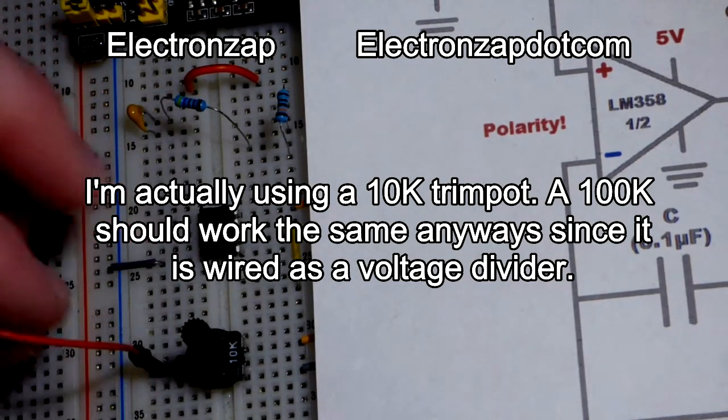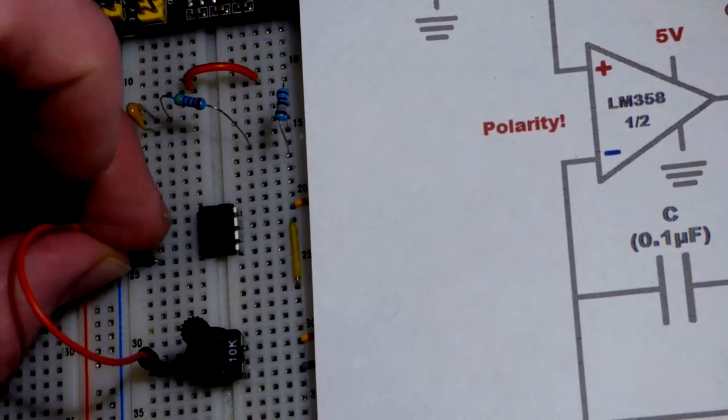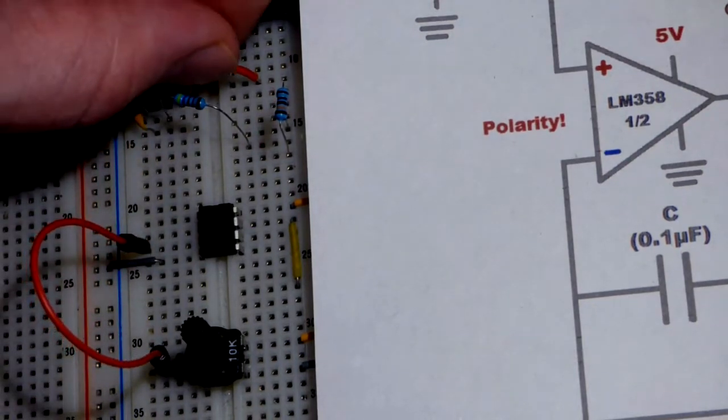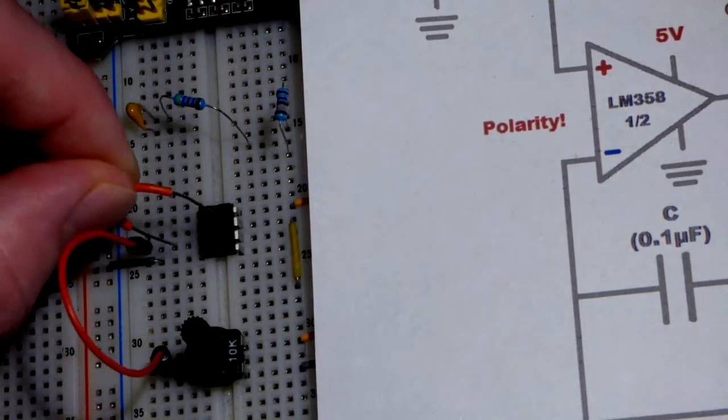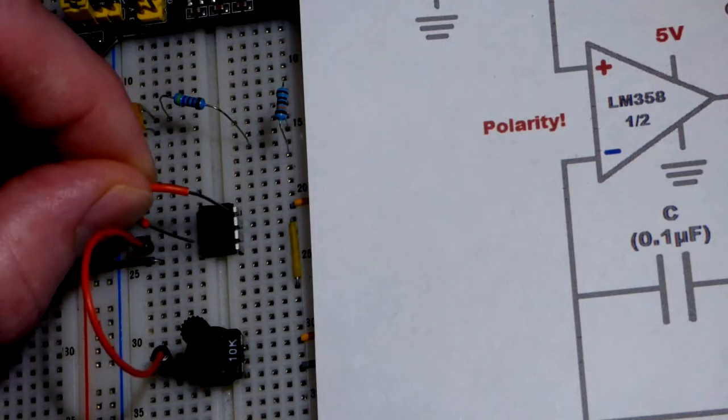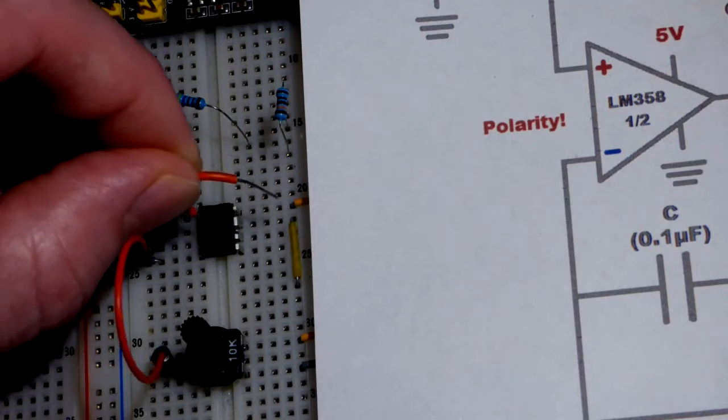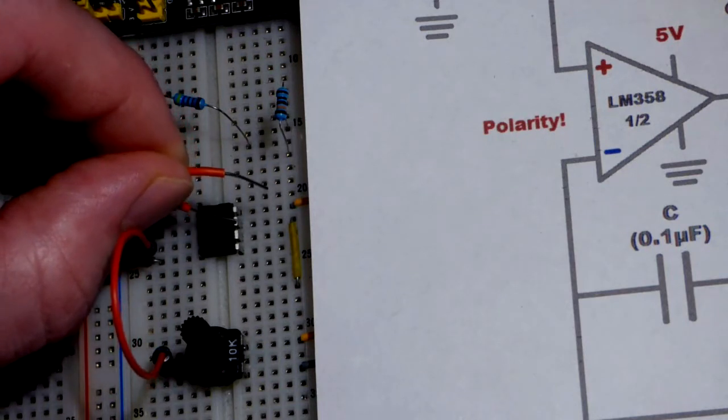We're going to take this jumper, go from the trim pot to the non-inverting input right there. Then we're going to take this jumper, and so this is the non-inverting input. Straight across is the inverting input for the next op-amp.